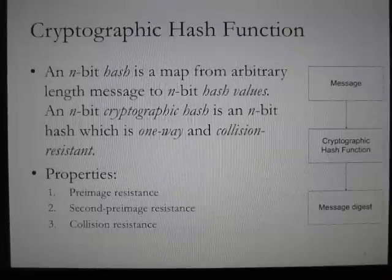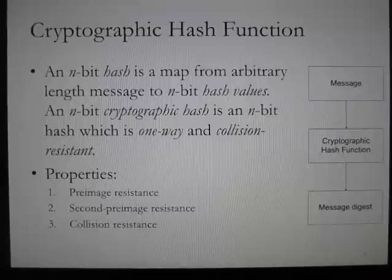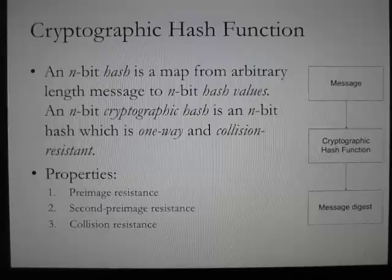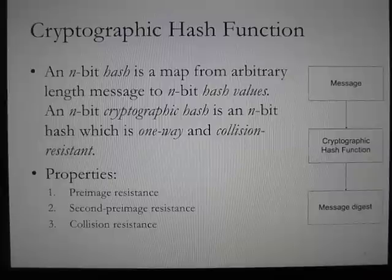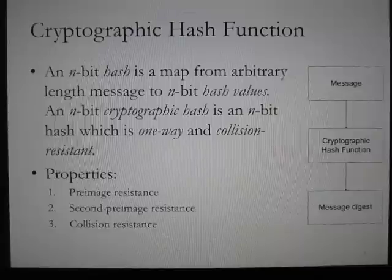What exactly is a cryptographic hash function? A cryptographic hash function is defined as an N-bit hash — a map from an arbitrary length message to N-bit hash values — that is one-way and collision-resistant. Essentially, given an arbitrary length of data, it returns an N-bit digest. These secure hash algorithms generate an N-bit hash value in an iterative one-way hash function.